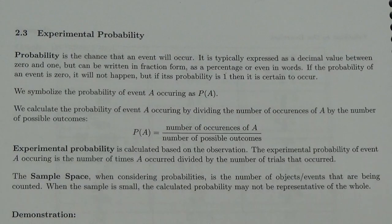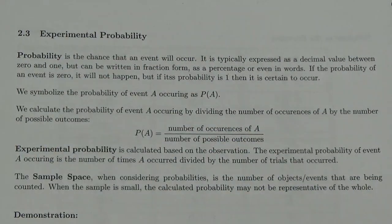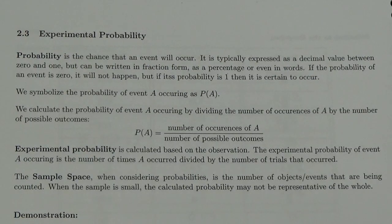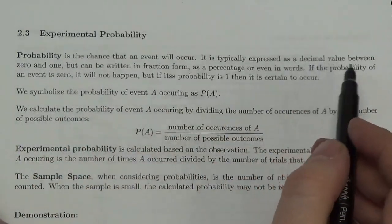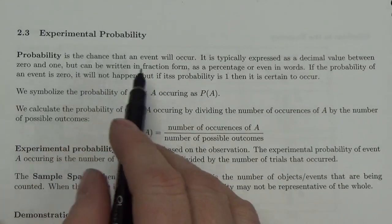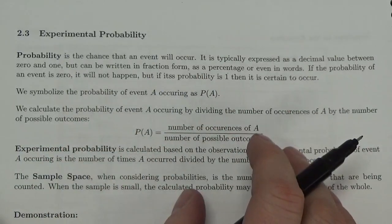We're going to start to talk about probability, beginning with experimental probability, which is maybe not something that you think about. Most of us, when we think about probability, normally jump to what we call theoretical probability. Probability is the chance that an event will occur, and it's typically expressed as a decimal between 0 and 1. It can also be written in fraction form and as a percentage form.